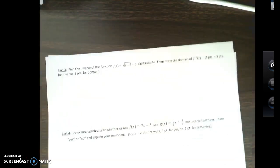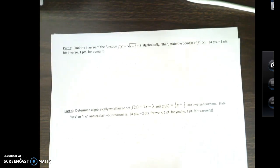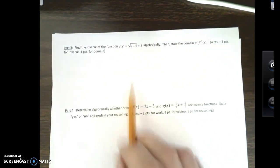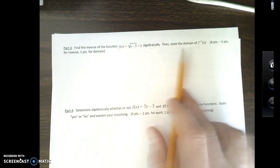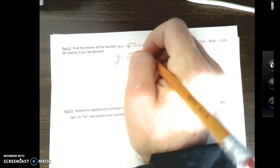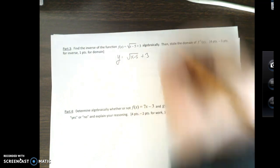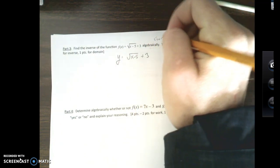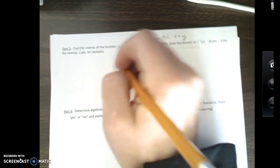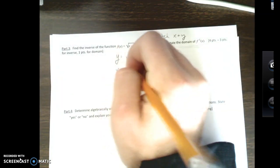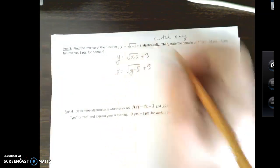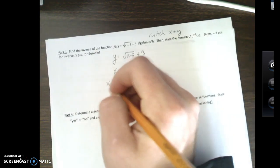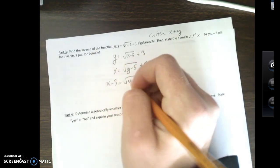Alright. Finally, back here. Part 3. Find the inverse function of f of x equals square root of x minus 5 plus 3 algebraically. Then state the domain of the inverse. Alright. So, f of x can be rewritten as y. To find the inverse, you switch x and y. Alright. So, this becomes x equals square root of y minus 5 plus 3. Alright. Do some work. Subtract 3 over. x minus 3 equals square root of y minus 5.